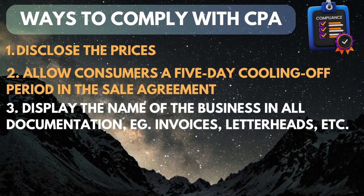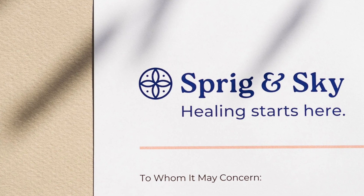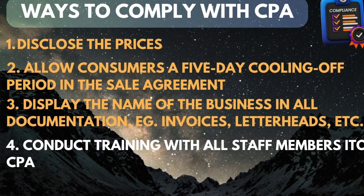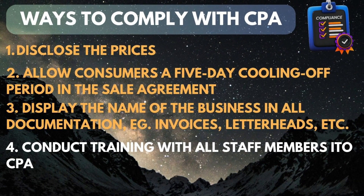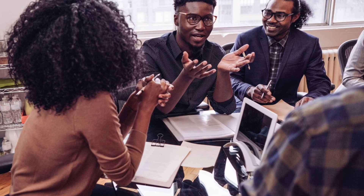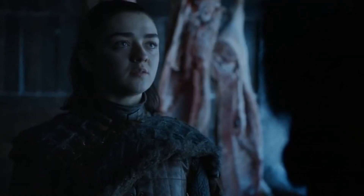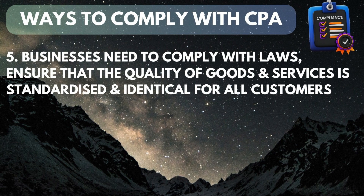The third point: the business is supposed to display the name of the business on all business documents — on all invoices, slips, and contracts. It is the responsibility of the business to display their name. The fourth point: the business is supposed to provide adequate training to staff in terms of consumer protection, so workers know exactly how to treat customers.